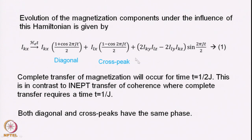If t = 1/(2J), what happens? cos(π) = −1, so (1 + cos(2π·J·t))/2 becomes (1 + (−1))/2 = 0, and (1 − cos(2π·J·t))/2 becomes (1 − (−1))/2 = 1. This means there will be complete transfer of magnetization from IKX to ILX. Both the diagonal term IKX and the cross peak term ILX are along the x-axis, so they have the same phase and will produce the same phase in the final spectrum — both diagonal and cross peaks have the same phases.